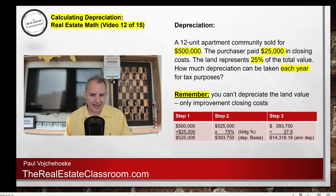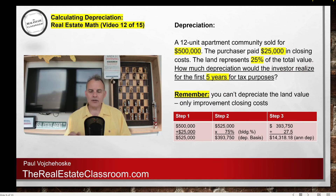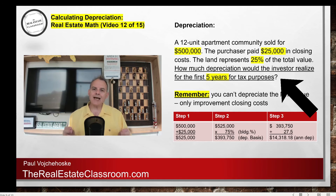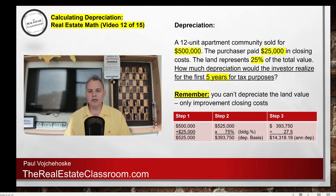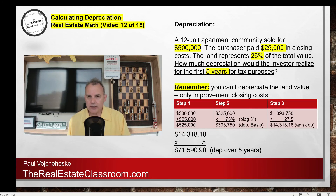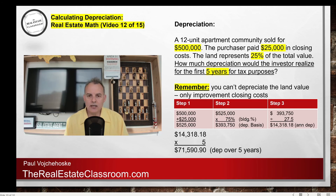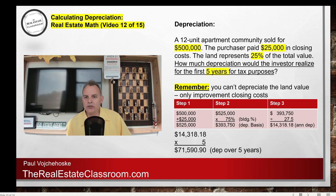Occasionally a test question may be phrased differently — using the same scenario but asking: how much depreciation would the investor realize over the first five years for tax purposes? We do steps one through three just like normal, but add a fourth step: we take the annual depreciation of $14,318.18 and multiply it by five years. That gives us a total of $71,590.90, which would be the answer to this version of the test question.